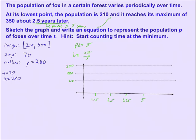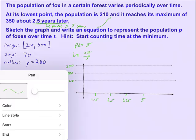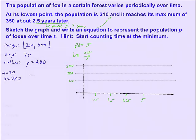But this is a little bit different from what we've seen before, because in this case the number of foxes starts at its lowest point and it reaches its max 2.5 years later. So we're starting at 210 foxes. We're reaching the maximum at two and a half years later, which means we passed through the midpoint about halfway.